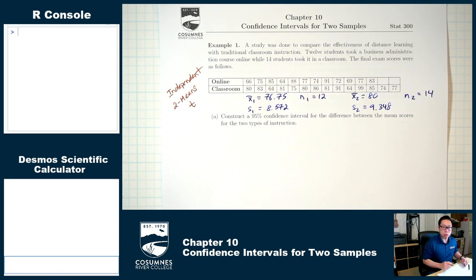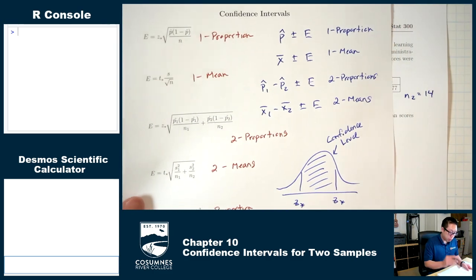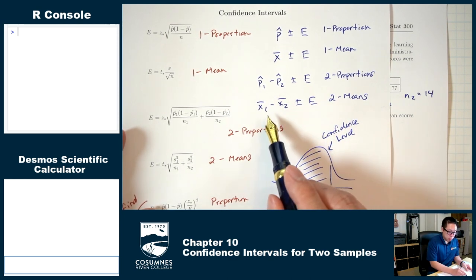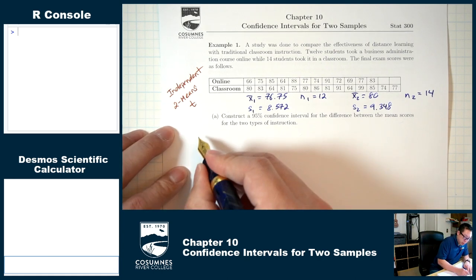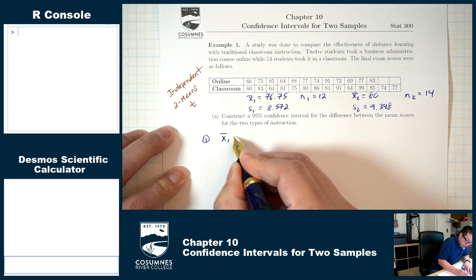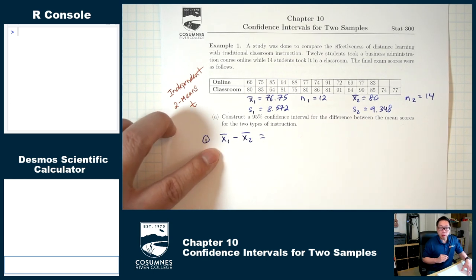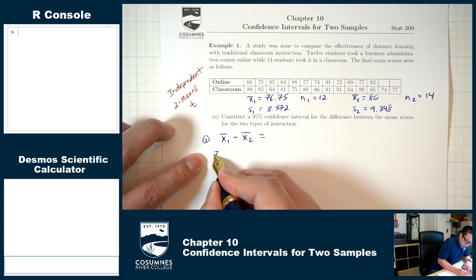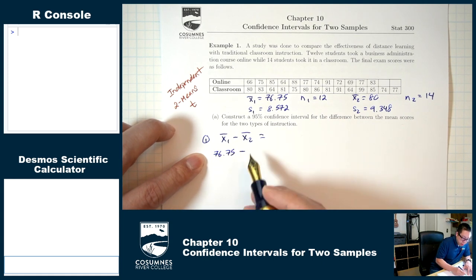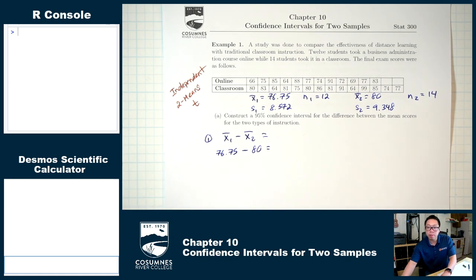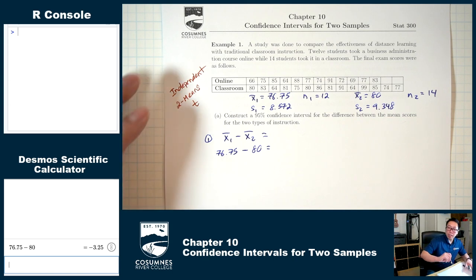Now we're ready to construct our confidence interval. This is a two-means situation, so our final product should look like x-1-bar minus x-2-bar plus or minus the margin of error. Step one: x-1-bar is 76.75 and x-2-bar is 80, so 76.75 minus 80 is negative 3.25.